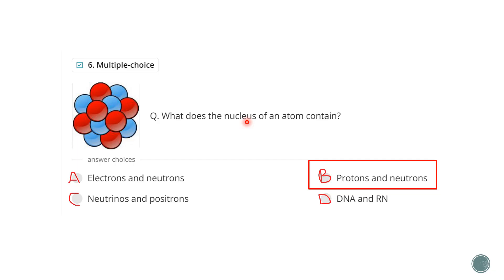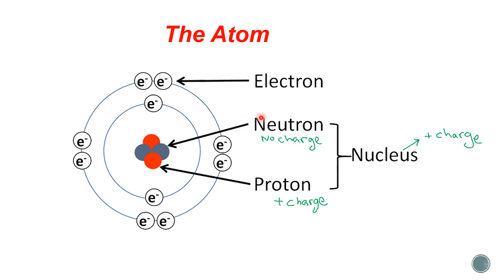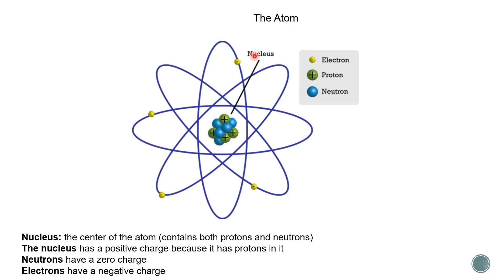That was just a quick refresh for the basic knowledge you studied in grades 6, 7, and 8. Inside the nucleus you have neutrons with no charge and protons with positive charge — together they make the nucleus, which is overall positively charged. Around the nucleus we have the negatively charged particles, which are the electrons. You can stop the video here to review the definitions of the particles inside the atom.